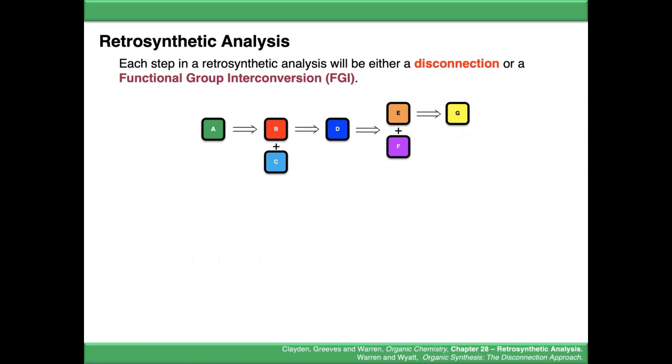Every step in your retrosynthetic analysis is either going to be what we call a disconnection or a functional group interconversion or FGI. If we look at all the steps in this retrosynthesis, we can see some are disconnections and some are FGIs.